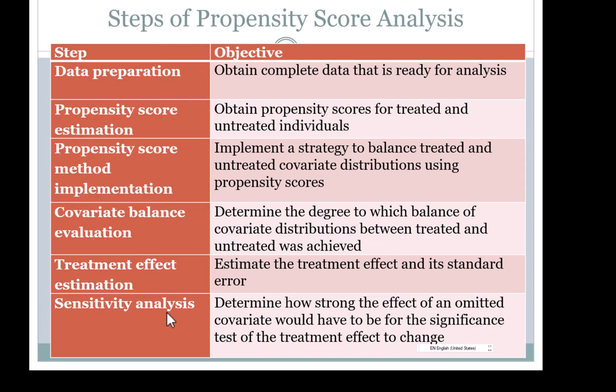Propensity score analysis is a multiple-step process, and some steps are quality control steps. The first step is data preparation — getting data ready for analysis. This can take some time because it includes selecting covariates, handling missing data in the covariates, and handling outliers in the covariates.